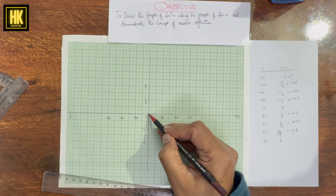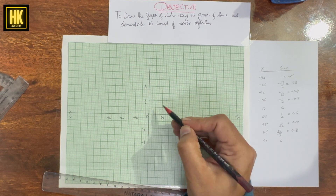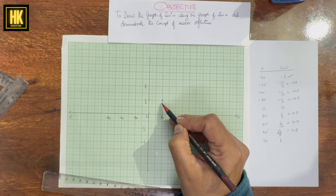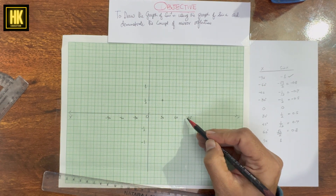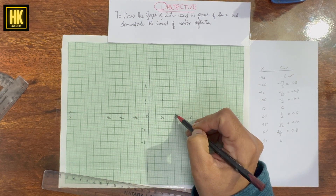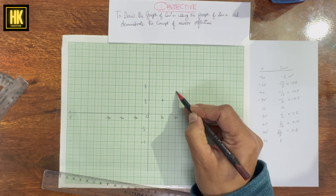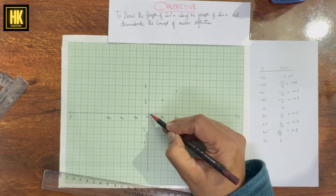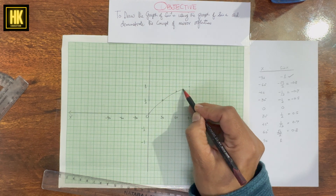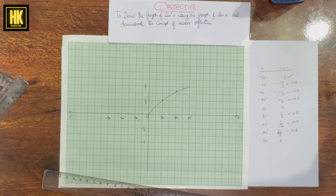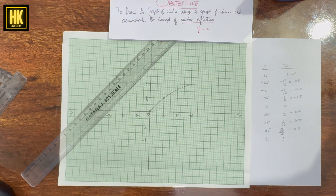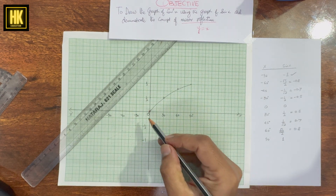Now we will plot these values on the graph. Starting with sine(0°) = 0, then sine(30°) = 1/2, so the point is (30, 0.5). For 45° the value is 0.7, and for 60° it is also approximately 0.7, and for 90° it is 1. We join these points to form the curve y = sine x.